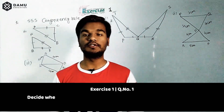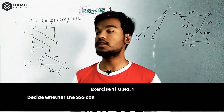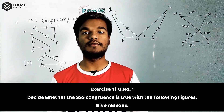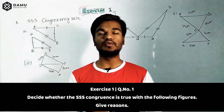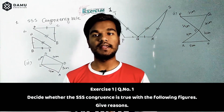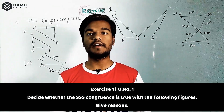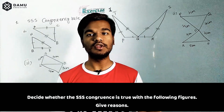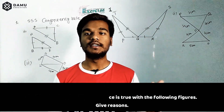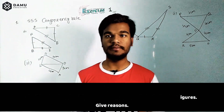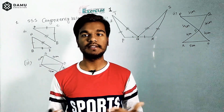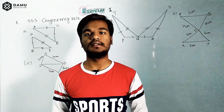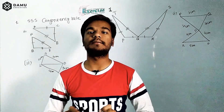We are going to discuss the solutions for exercise one on congruency rules of triangles. What is meant by congruency rules and why are they required? If we take any two triangles and know some measurements from each, and if both sets of measurements are equal, then both triangles will have equal dimensions.